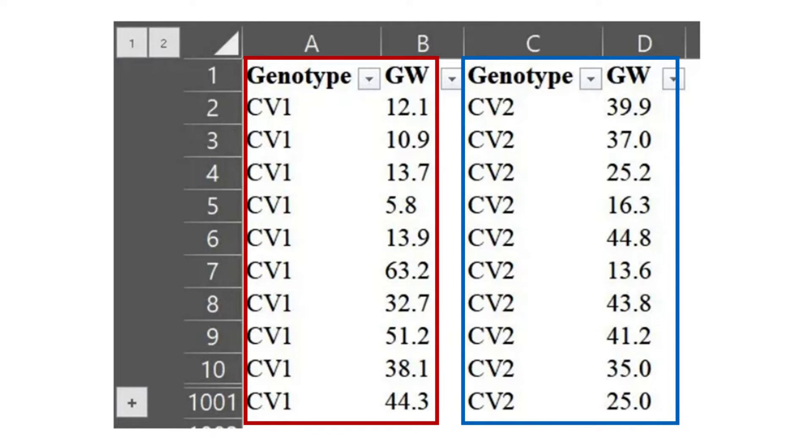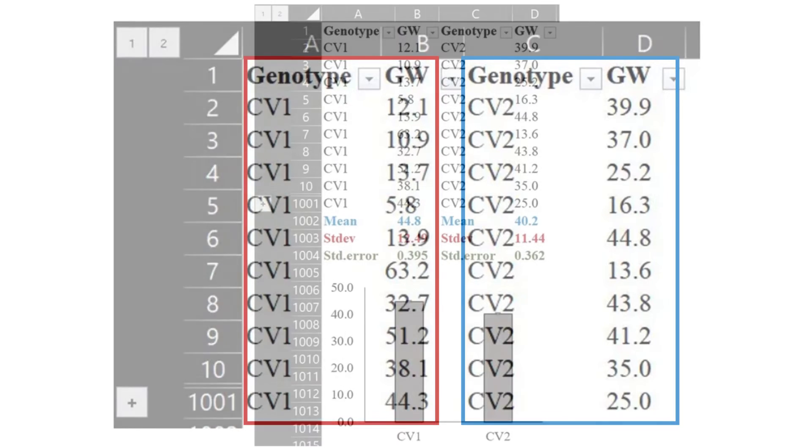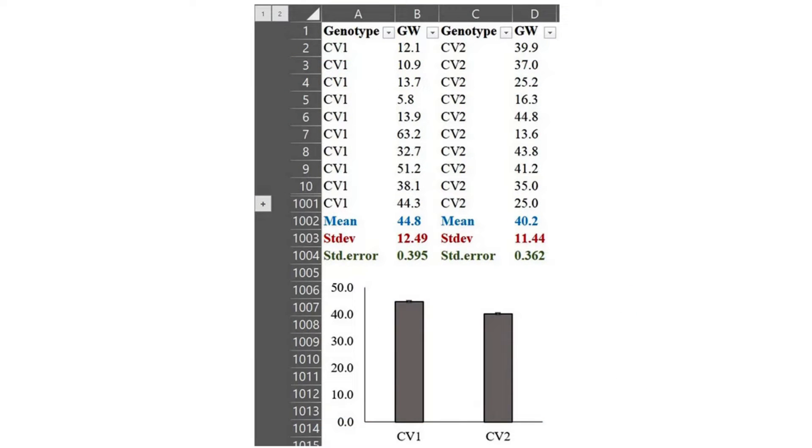Simply, we can show the result as a bar graph after calculating average grain weight and adding standard error. Now we see that average grain weight in CV1 is greater than in CV2, and that's it—we cannot know how CV1 is greater than CV2. However, if we calculate probability density function, we'll be able to see the distribution of grain weight, and it would tell more stories.